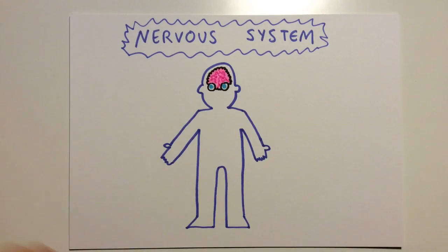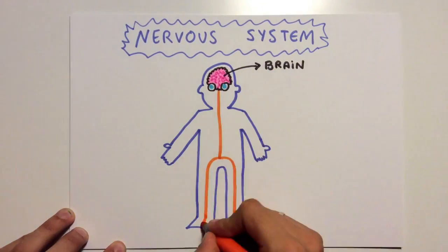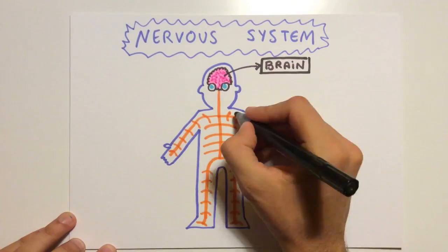The most important parts of the nervous system are the brain, the nerves and the spinal cord.